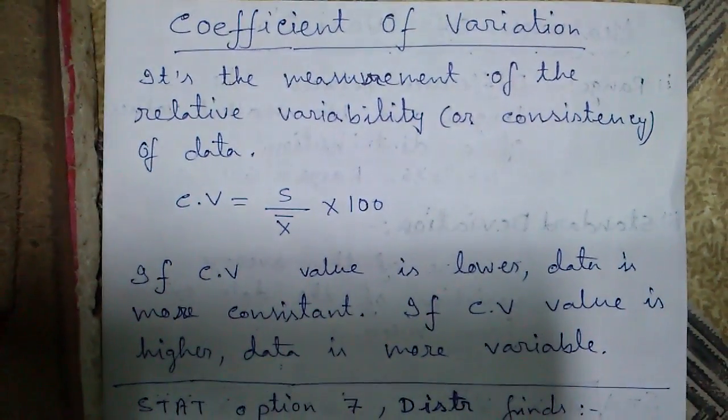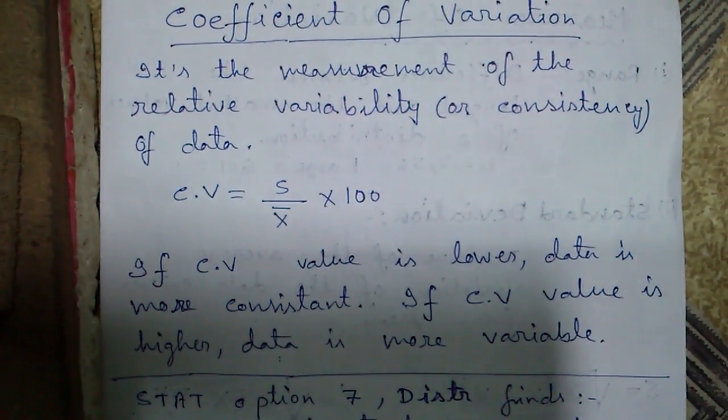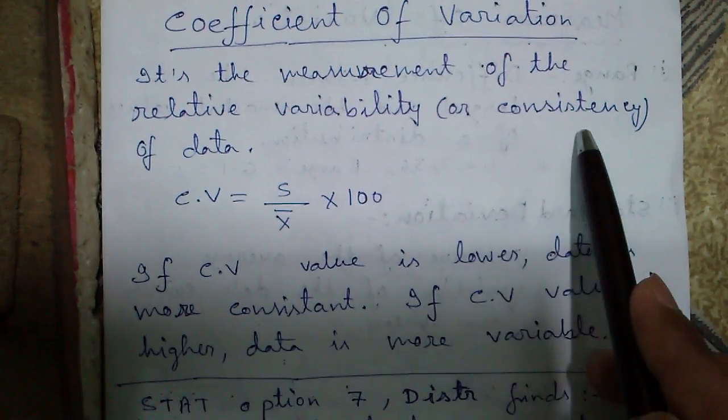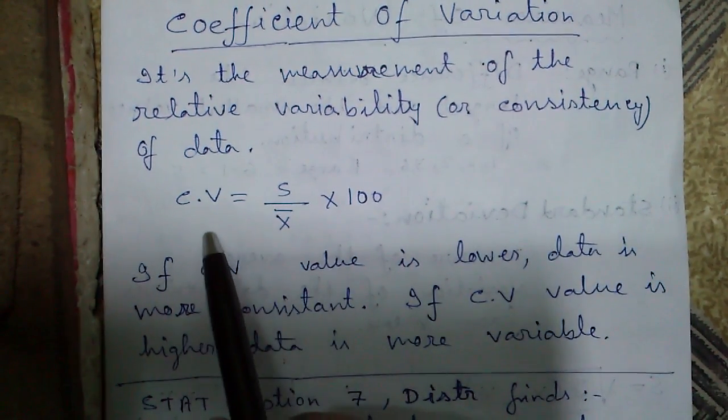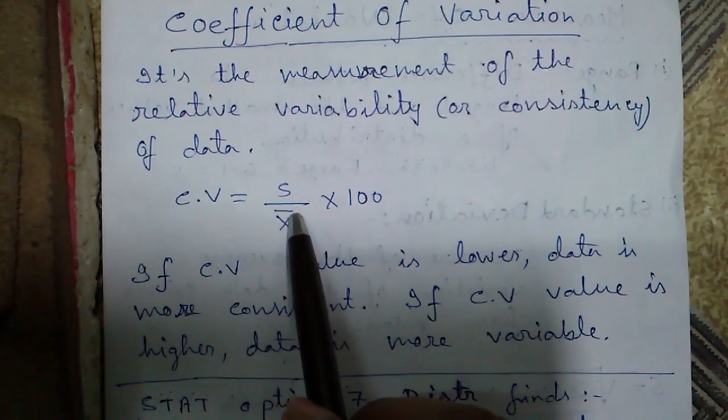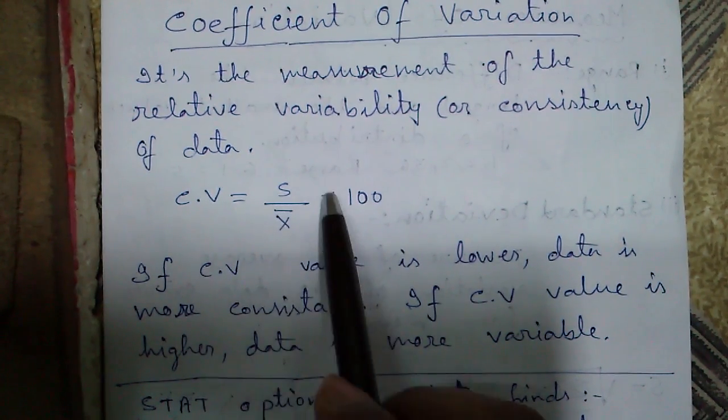Next is coefficient of variation. Coefficient of variation is the measurement of the relative variability or consistency of data. Coefficient of variation CV is given by standard deviation S divided by mean x bar times 100.